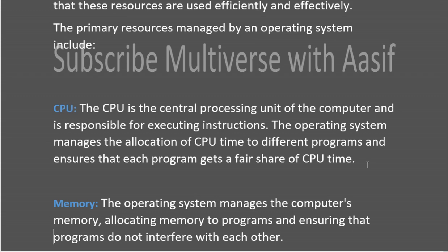Whenever a process needs CPU time for its execution, it is the job of the operating system to allocate the CPU to that process. When a process completes its execution, the operating system must also preempt the CPU from that process and allocate it to another process that needs it. This is done by different scheduling algorithms — such as CPU scheduling algorithms that decide to which process the CPU will be allocated. We will discuss these in our coming lectures.